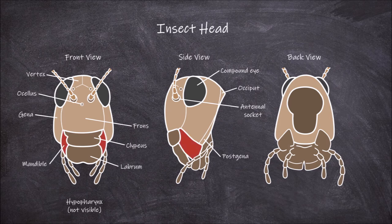The mandibles are like the jaws of the insect mouth and function in cutting and crushing food. The fourth type of mouth part is the labium, also known as the lower lip of the insect mouth. And the last mouth parts are the paired maxillae.